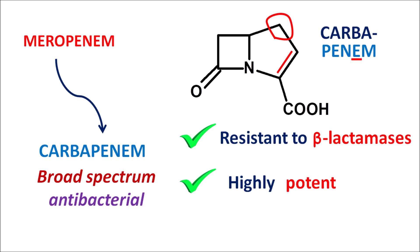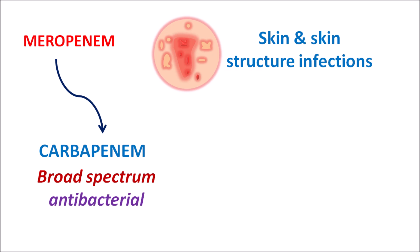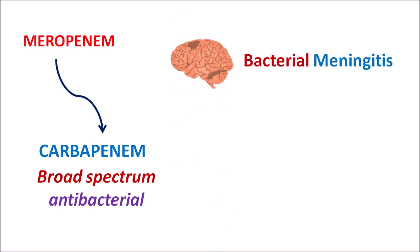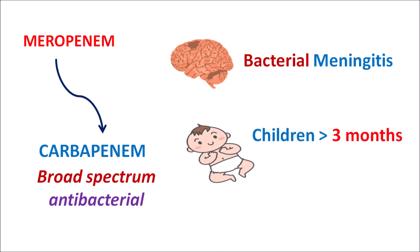Meropenem can be used for the treatment of skin and skin structure bacterial infections, as well as intra-abdominal infections, given by IV infusion. It can also be used for bacterial meningitis because of its broad spectrum of activity. Interestingly, this drug can be given to both children (age greater than three months) and adults. Since it is given by IV infusion, it is indicated only in the hospital setting for various types of bacterial infections that are resistant to penicillins.